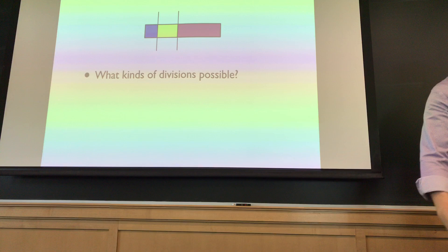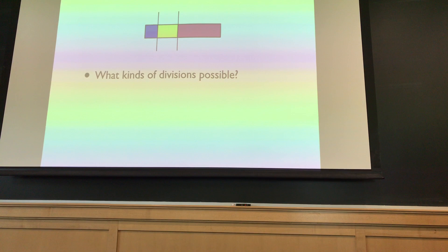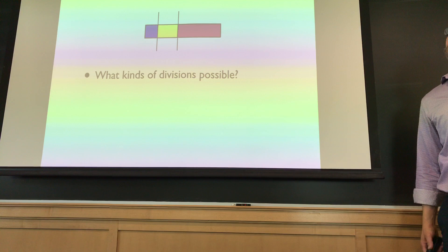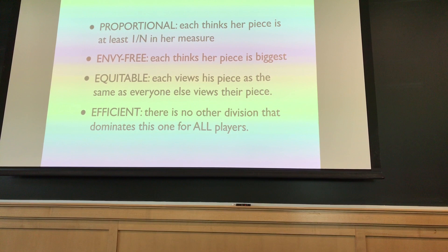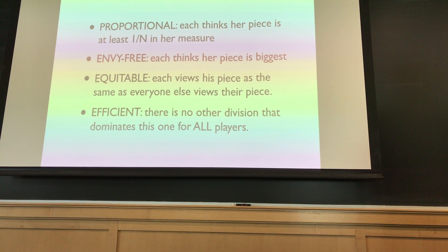What does it mean to cut? If I'm cutting cake, one way is moving a knife over the cake and making parallel cuts. There are also other ways — like wedges for a pie. And there are lots of notions of fairness. One is proportional division: if there are n people, guarantee each gets at least 1/n of the cake. That's not as strong as envy-free division, where I believe I got the most cake in my own measure.